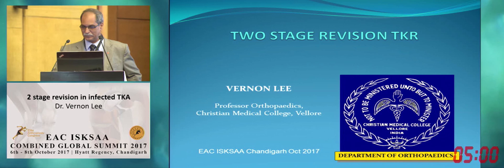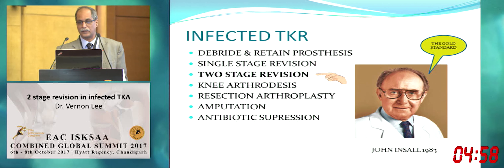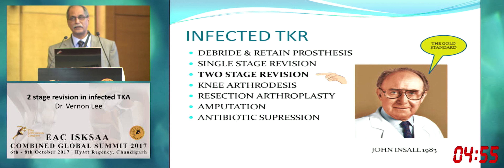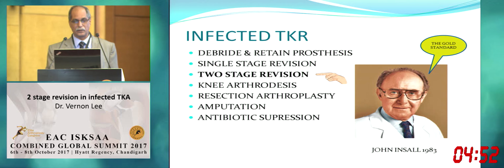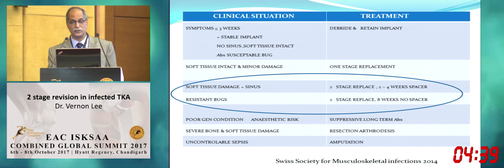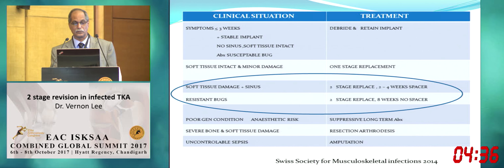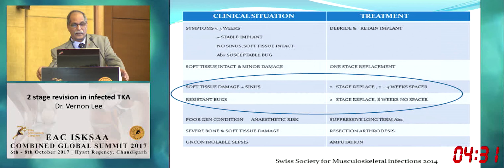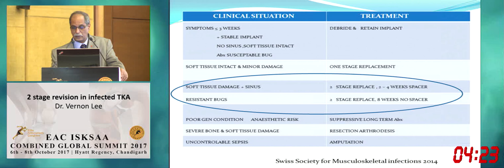Thank you to the organizers. There are many ways to skin a cat. John Insall in 1983 in his much-quoted paper said that two-stage revision remains the gold standard. The Swiss have noted that it depends on the clinical situation. Two-stage is indicated when there is a lot of soft tissue damage, a sinus, or resistant bugs — that's when you should do a two-stage rather than anything else.